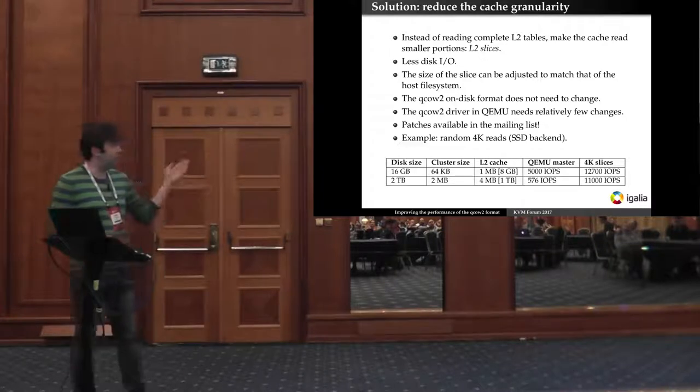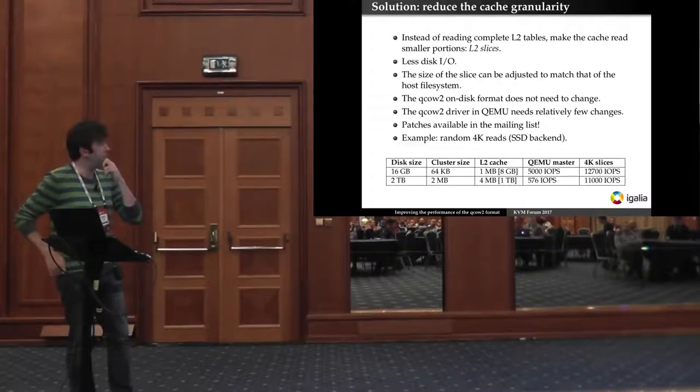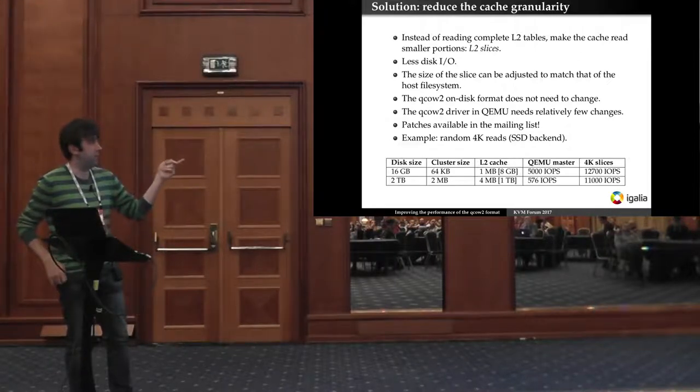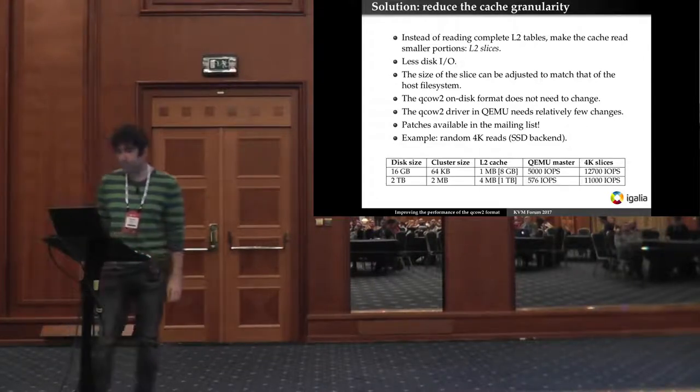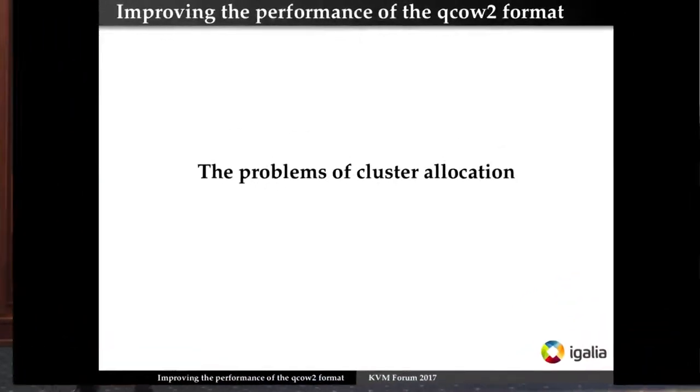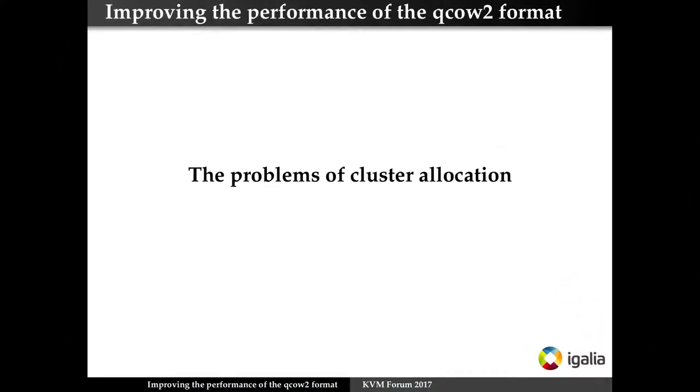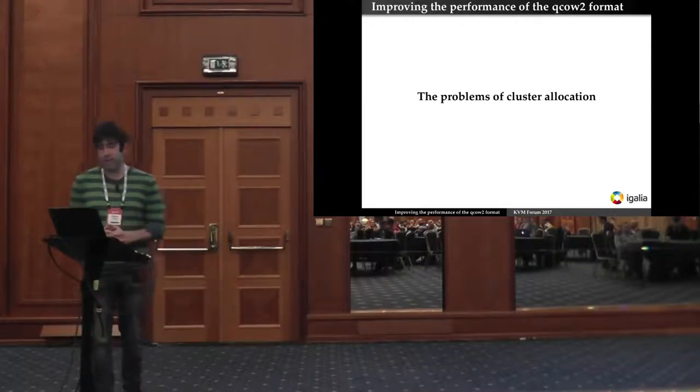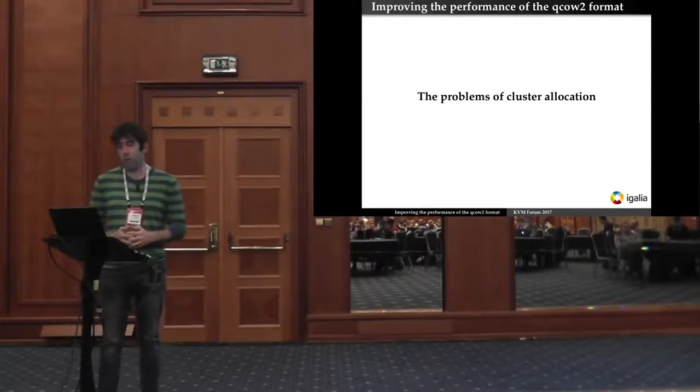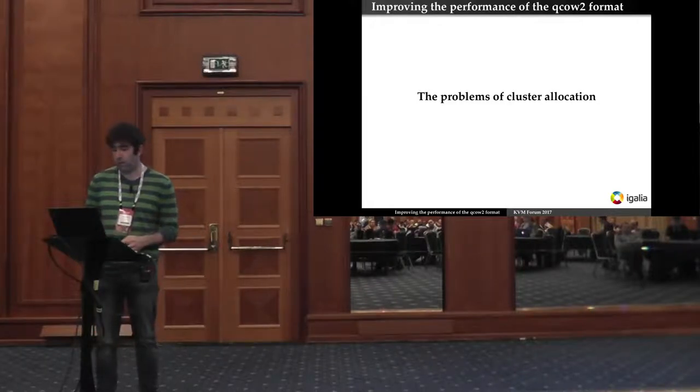This is a quick example that I made with 4k random reads with an SSD backend and as you can see the performance is clearly better with 4k slices especially with larger clusters. So now that we've seen the problems that are consequence of the L1 and L2 tables, let's see the problems that are consequence of the way the clusters are allocated in QEMU.